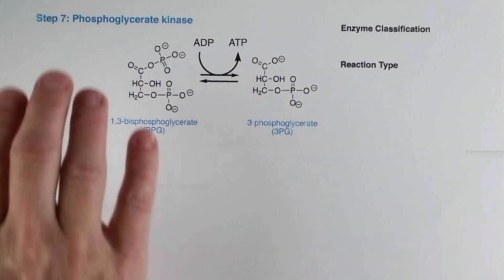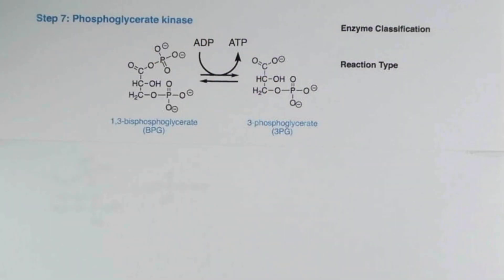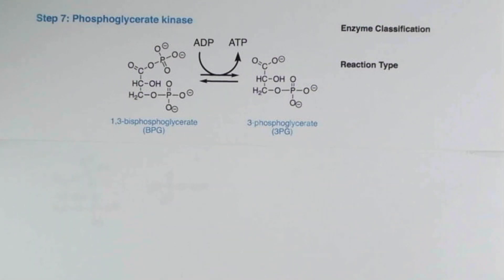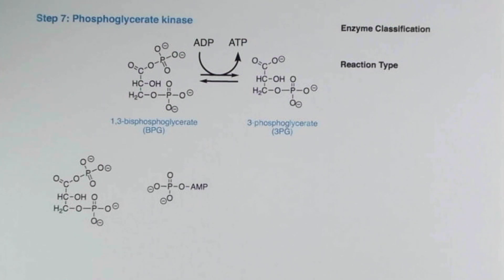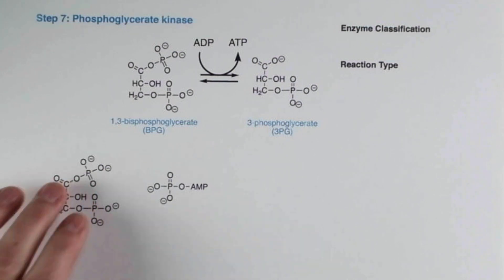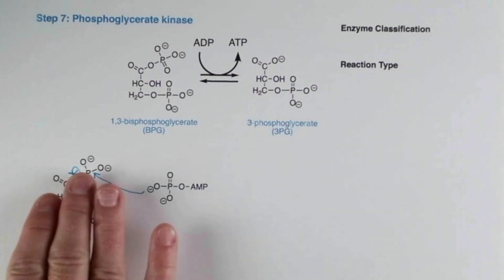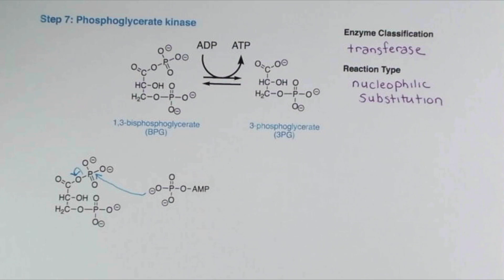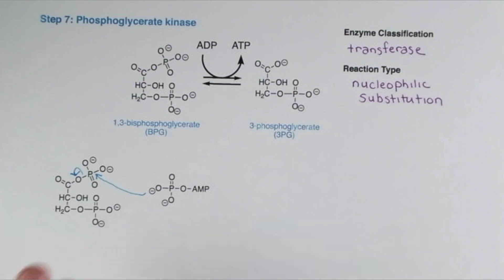The enzyme that catalyzes step 7 of glycolysis is phosphoglycerate kinase. This enzyme is actually named for the reverse reaction where we'd think about adding a phosphate group to 3-phosphoglycerate, but we'll look at the reaction in the glycolysis direction. This reaction in vivo is reversible. ADP will attack this phosphate and kick the electrons onto oxygen, and with the transfer of this phosphate group, we form ATP. The enzyme is therefore classified as a transferase, and the type of reaction is nucleophilic substitution. When we transfer a phosphate group to ADP from a compound that has higher phosphoryl transfer ability, this is called substrate-level phosphorylation.